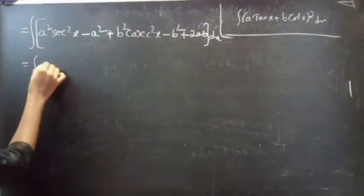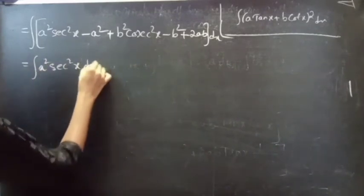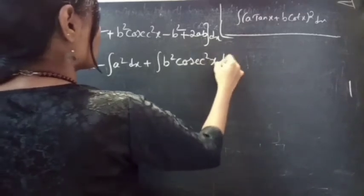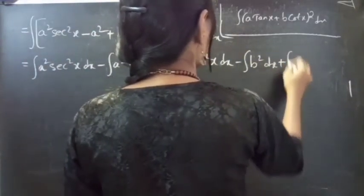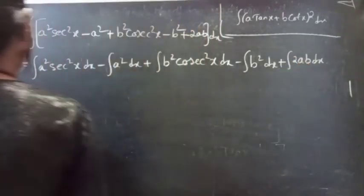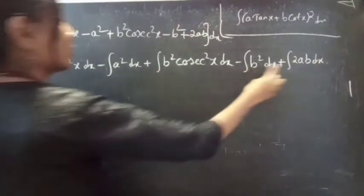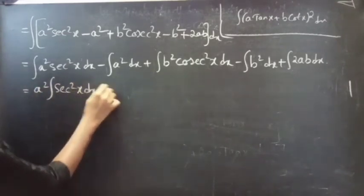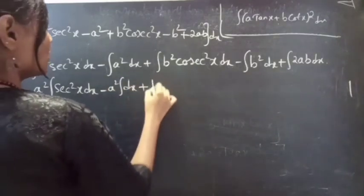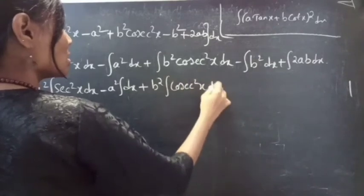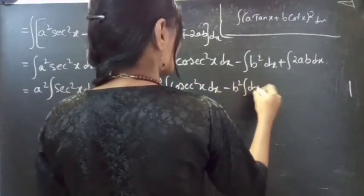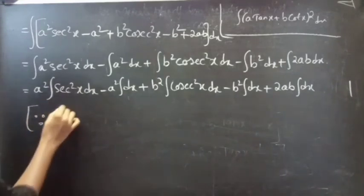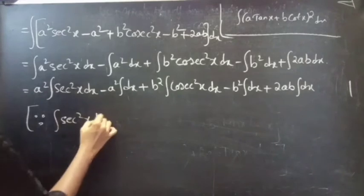This equals the integral of a²sec²x dx minus the integral of a² dx plus the integral of b²csc²x dx minus the integral of b² dx plus the integral of 2ab dx. Taking the constants outside the integrals: a²∫sec²x dx − a²∫dx + b²∫csc²x dx − b²∫dx + 2ab∫dx. We know that ∫sec²x dx = tan x + C.